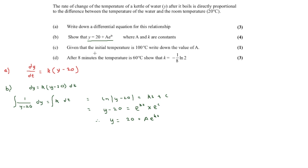Now we move to part C. Given the initial temperature is 100 degrees, we find the value of a. At t equals 0, y equals 100: 100 equals 20 plus a times e to the 0, and e to the 0 is 1, so a equals 80.